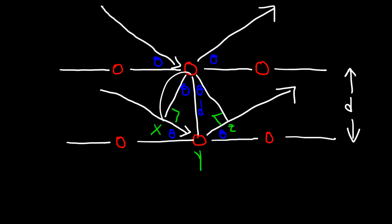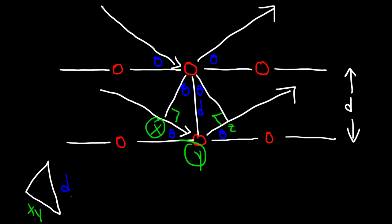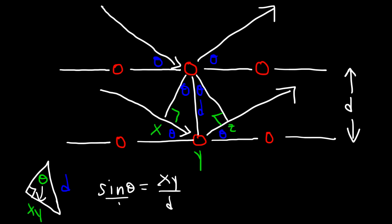Now drawing just this triangle: the hypotenuse is D. This side is xy — the distance between position x and position y. We have the angle theta. Using SOH-CAH-TOA trig, sine theta is equal to the side opposite to it, which is xy, divided by the hypotenuse, which is across the 90 degree angle, and that's D. So cross multiplying, xy is equal to D sine theta.